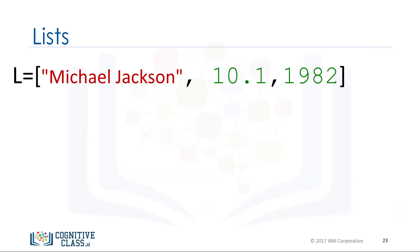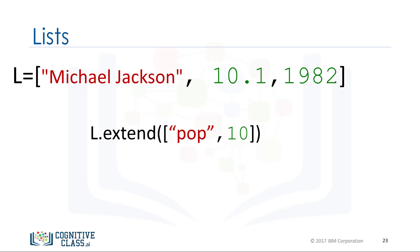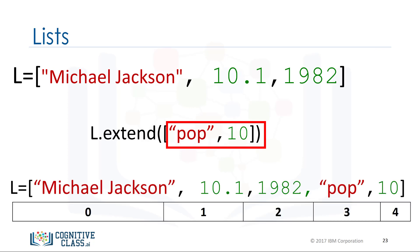Lists are mutable, therefore we can change them. For example, we apply the method 'extend' by adding a dot followed by the name of the method, then parentheses. The argument inside the parentheses is a new list that we are going to concatenate to the original list. In this case, instead of creating a new list L1, the original list L is modified by adding two new elements.